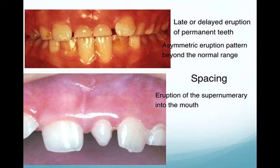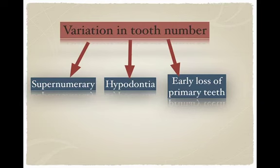Sometimes the supernumerary erupts into the oral cavity. It may not always cause a problem, but if the arch is crowded, it increases the severity of crowding. If the arch is well-aligned, it simply makes it crowded. That concludes supernumerary teeth as an etiology of malocclusion.